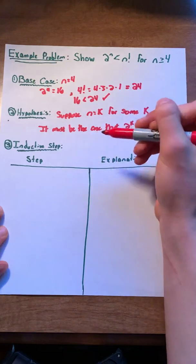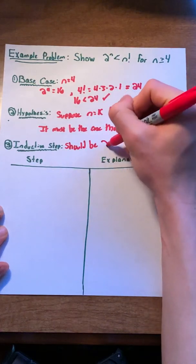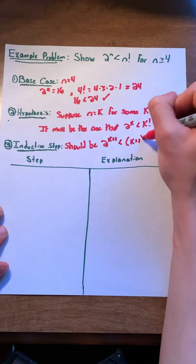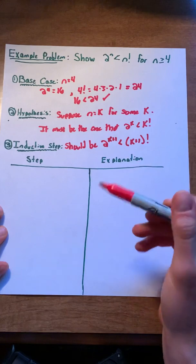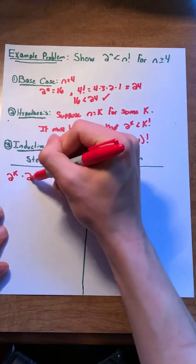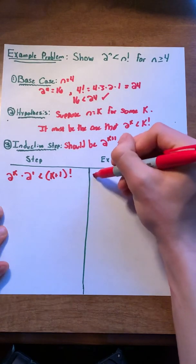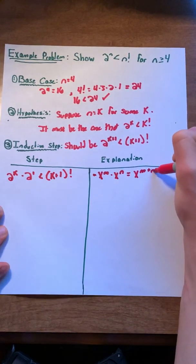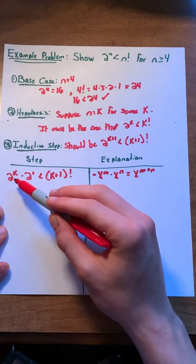So in our inductive step, we want to prove that this works for the next arbitrary value. So, it should be the case that two to the k plus one, our next arbitrary value, is less than k plus one factorial. We're now going to work our way through some basic math to show that this is actually the case. So first, let's simplify 2 to the k plus 1 to 2 to the k times 2 to the 1 is less than k plus 1 factorial. This works because x to the m times x to the n equals x to the m plus n. Essentially, we've done the inverse of this step. We had 2 to the k plus 1 and we broke it down into two different parts: 2 to the k and 2 to the 1.